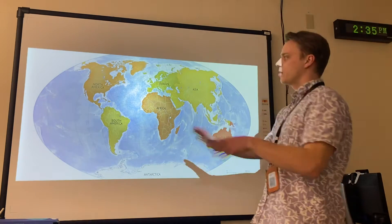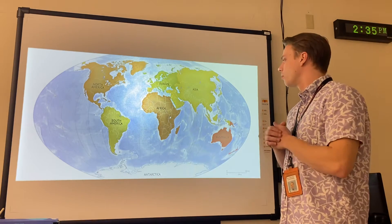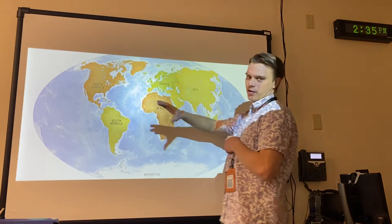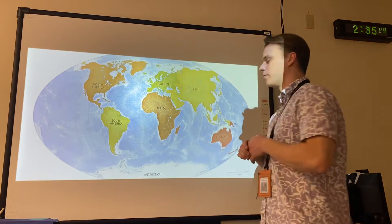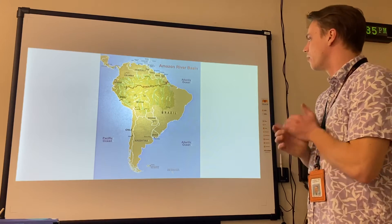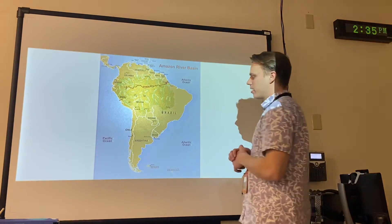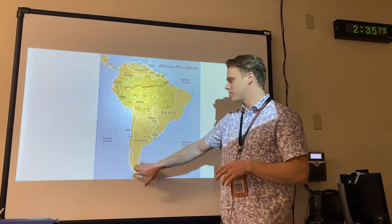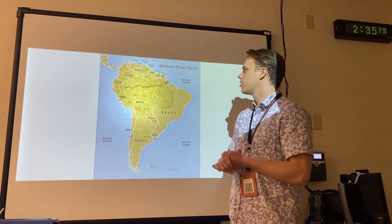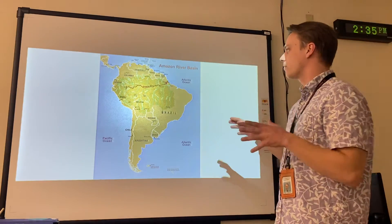All right, so here we have a map of the earth. We're going to be exploring a little bit of South America. Here's a zoomed-in view of South America — it goes all the way down to Chile and Argentina, all the way north to Venezuela and Colombia. So that's South America there.